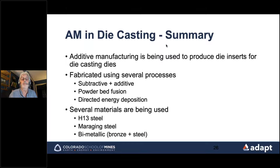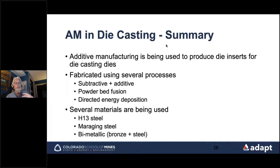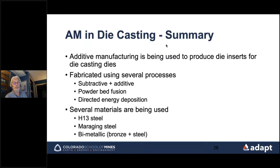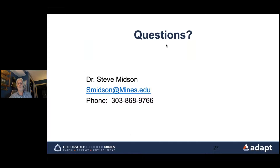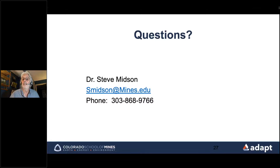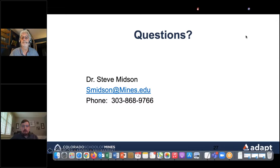In summary, additive manufacturing is being used to produce dies for die casting — primarily because of the conformal cooling available — fabricated using the subtractive-plus-additive process, powder bed fusion, and directed energy deposition for bimetallic cores. Materials currently used are H13 steel mostly for the subtractive-plus-additive approach, maraging steel for powder bed fusion, and bimetallic cores are available.